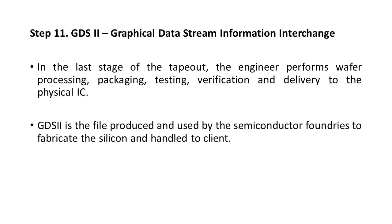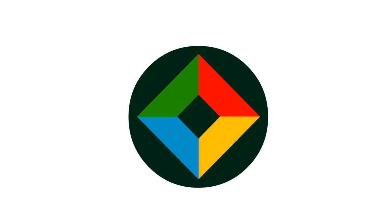Step 11: GDS2 (Graphical Data Stream Information Interchange). In the last stage of tape-out, the engineer performs wafer processing, packaging, testing, verification, and delivery of the physical IC. GDS2 is the file produced and used by semiconductor foundries to fabricate the silicon and hand it to the client. Thank you — if you like this video, please share and subscribe to Open Box Education.